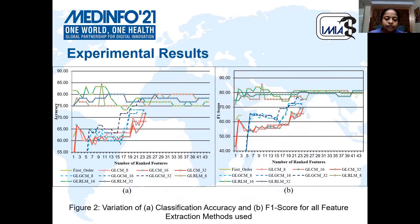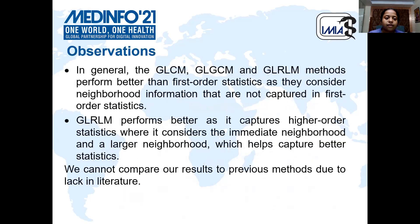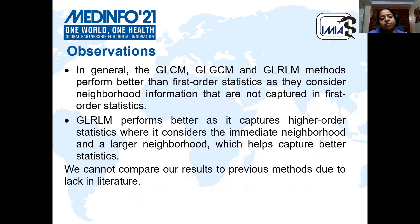As you can see from the graph, in general GLCM, GLGCM, and GLRLM perform better than first-order statistics, as they consider neighborhood information that is not captured in first-order statistics. GLRLM performs better than all the methods because it captures higher-order statistics. We cannot compare our results to previous methods due to a lack of existing literature on SCA-12.